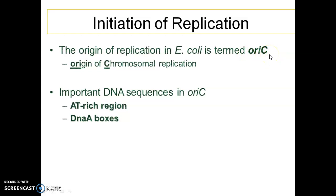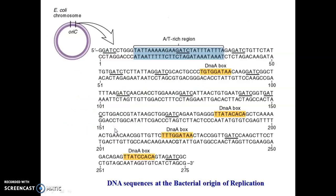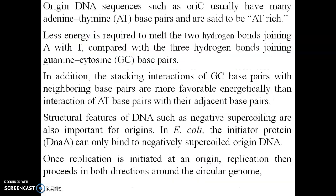OriC has two very important features: the first one is an AT-rich region, and the second one consists of DnaA boxes. This is an enlarged picture of the OriC sequence in the E. coli chromosome. The OriC is AT-rich followed by DnaA boxes 1, 2, 3, and 4 in the bacterial origin of replication. The origin of replication is AT-rich because adenine-thymine has only 2 hydrogen bonds compared with the 3 hydrogen bonds of GC.